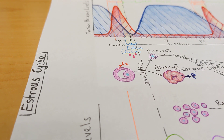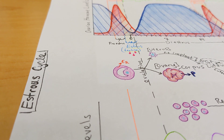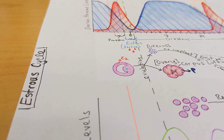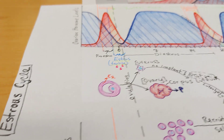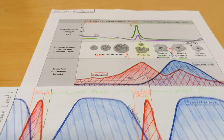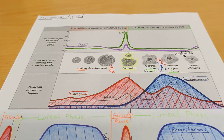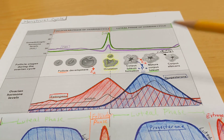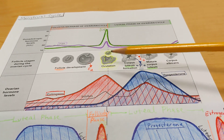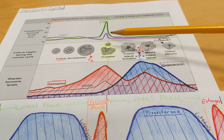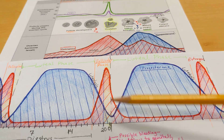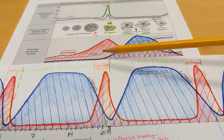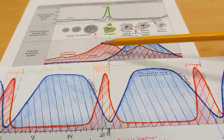In this video I will describe a general estrus cycle and compare it with the menstrual cycle of a human female. For comparison I have aligned ovulation in both the estrus cycle as well as the menstrual cycle.